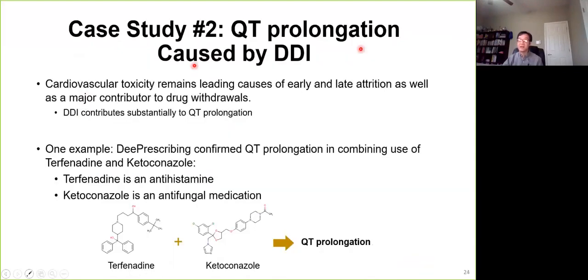The second case is QT prolongation caused by drug-drug interactions. Cardiovascular toxicity is still the leading cause for early and late attrition and drug withdrawal from the market. Drug-drug interactions contribute substantially to QT prolongation. Here we give a very quick example with these two drugs. One is terfenadine, a classical antihistamine drug, and ketoconazole is an antifungal drug. These drugs are typically used together to treat the disease and also cause QT prolongation. Using our models to assess these drug-related drug-drug interaction clinical outcomes, we successfully identified the QT prolongation from it.